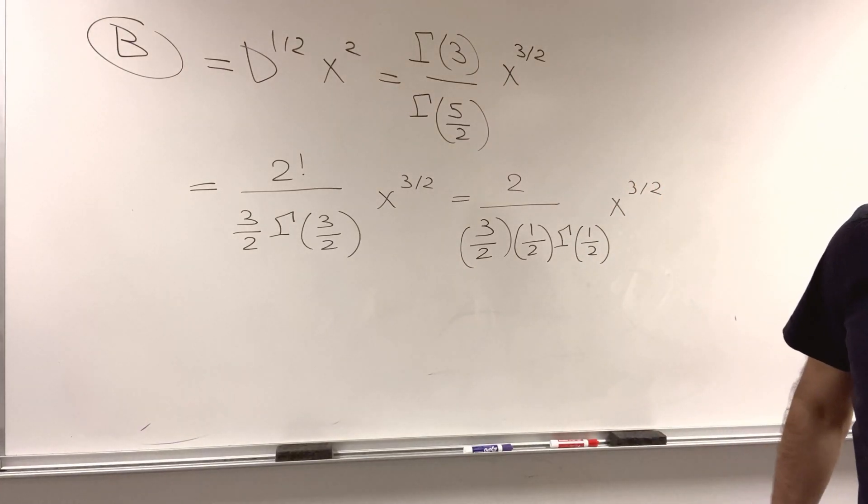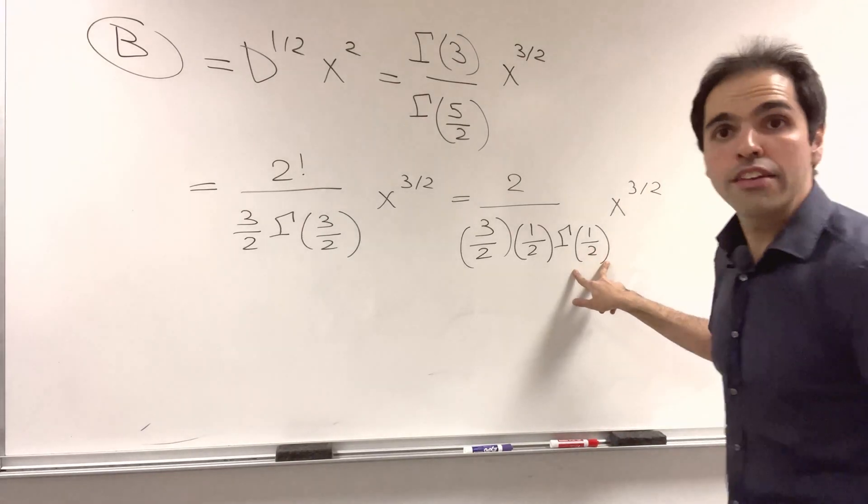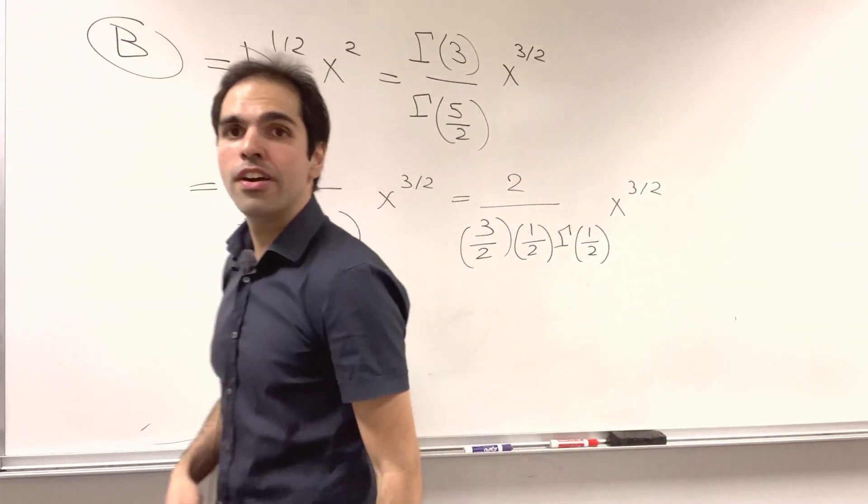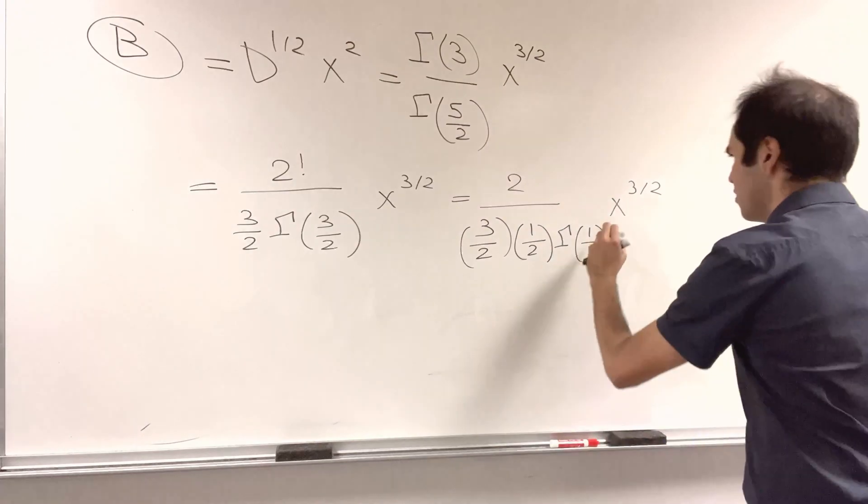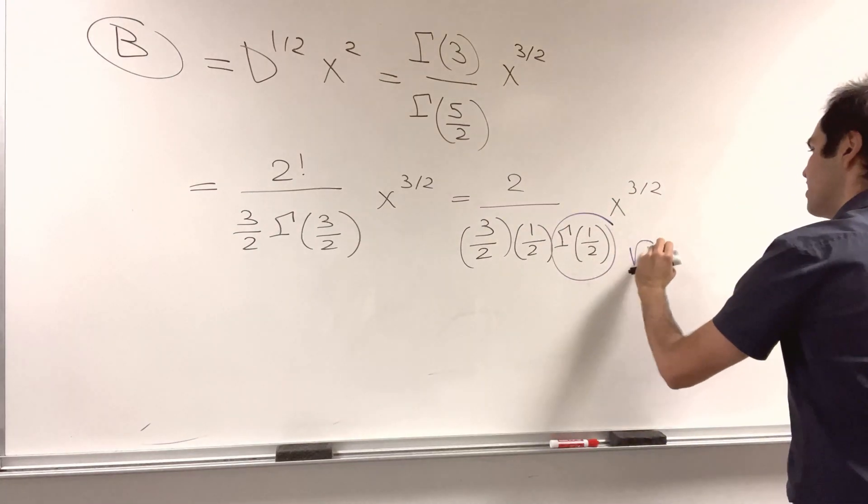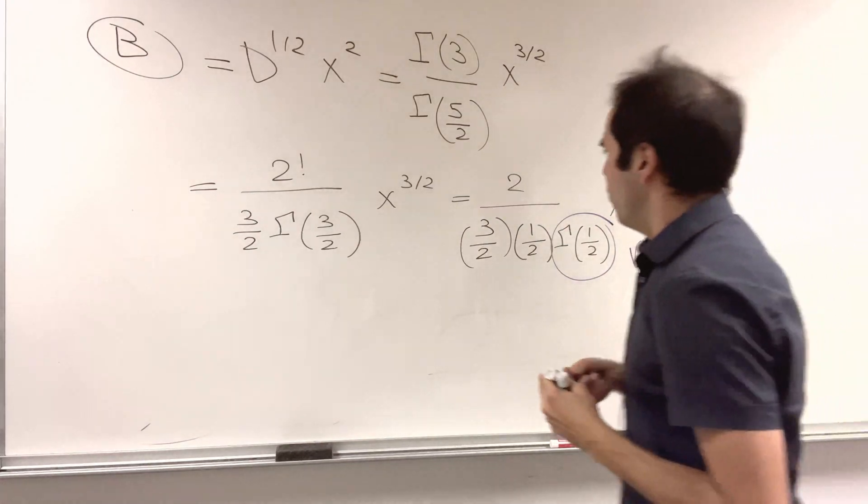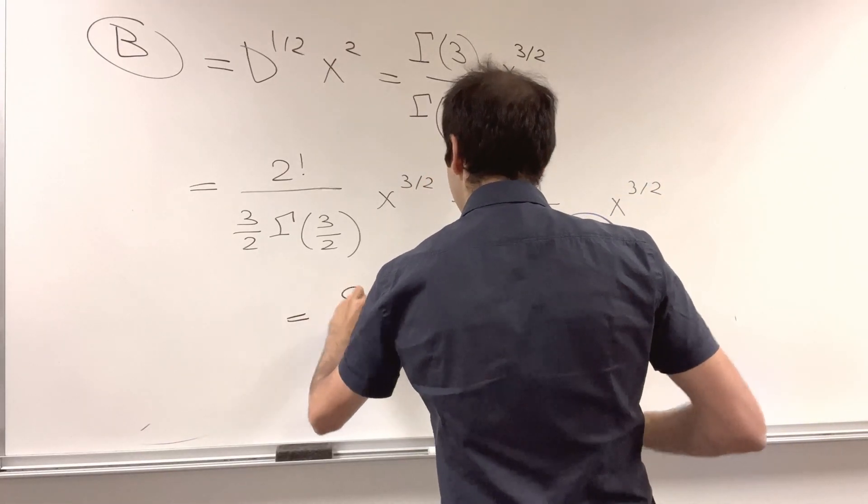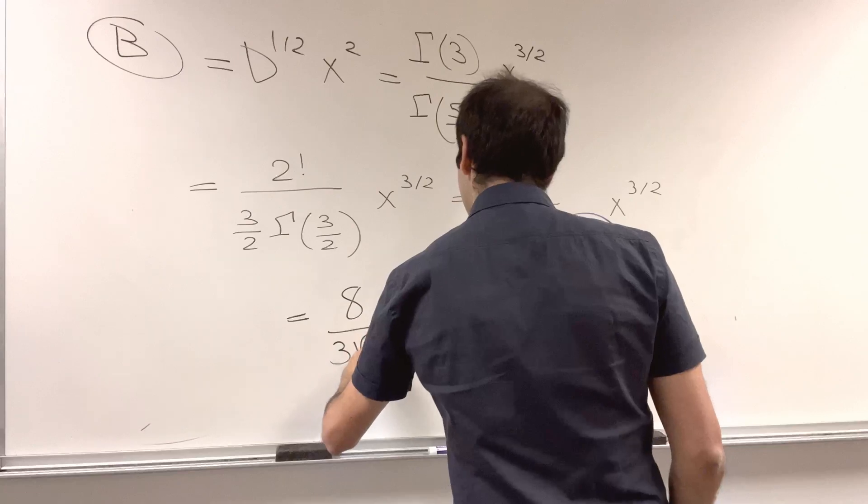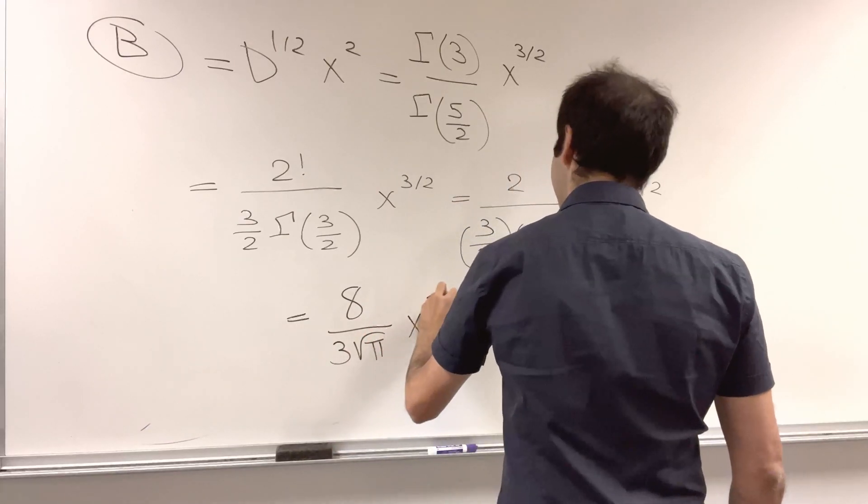And then I think we just get 3 over 4, so that I believe I calculated in another video and we got √π, because it just kind of becomes a Gaussian integral. And then what we end up getting if you calculate this, it's 8 over 3√π x to the 3/2.